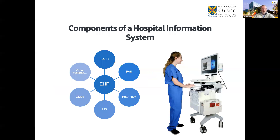In a modern hospital, there are many different types of information systems in use. We have the electronic health record system, a picture archiving communication system used for storing digital images such as radiology images — chest x-rays or CT scans — and a patient administration system used by hospital administration when you arrive, to check registration and sort out your basic information. Pharmacies and hospitals also have information systems for keeping track of drug stock, what needs to be ordered, how drugs are dispensed, and tracking prescriptions.